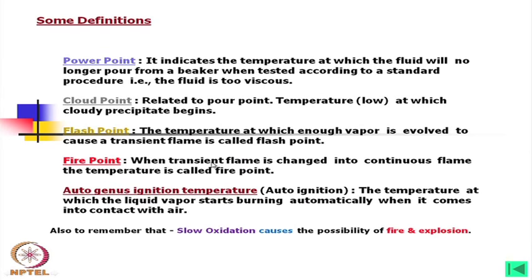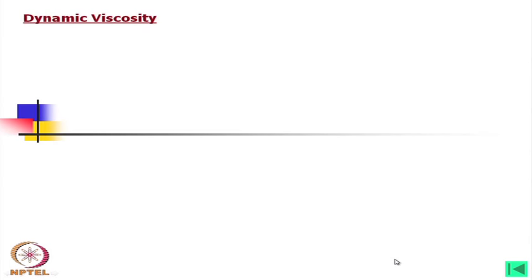Also remember that slow oxidation causes the possibility of fire and explosion — we have to keep that in mind. While selecting an oil and for the environment where we are using the machines, we have to consider all such things. In fact, looking into oil catalogs, different graphs with information are provided, so you can select a proper oil from that. Manufacturers of fluid power components also provide suggestions about what type of oil can be used for what type of operations.